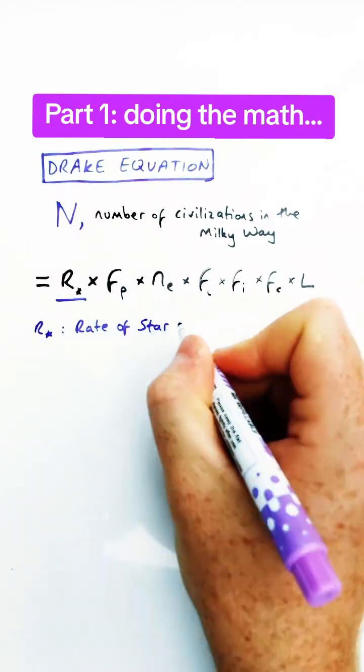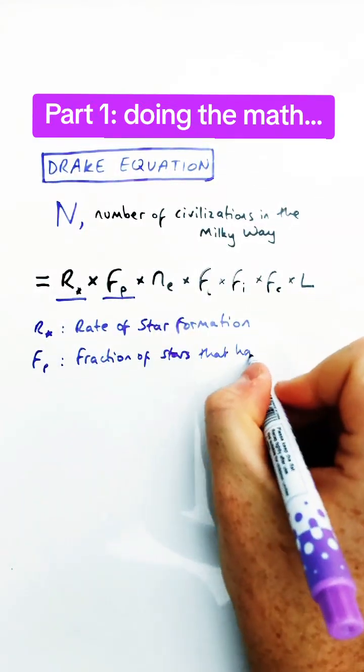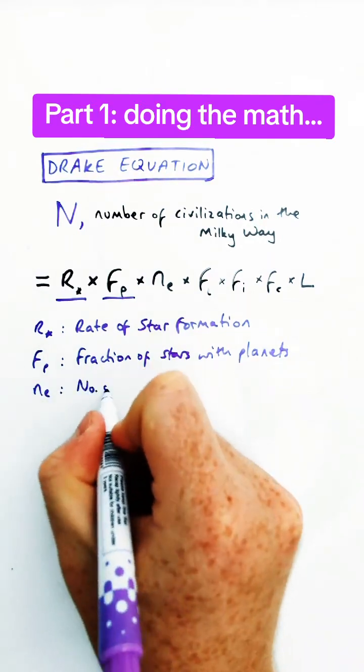The equation contains lots of different variables that can affect the likelihood of us finding aliens in our galaxy. Things like how quickly stars form, the fraction of those that have planets that could have life on them.